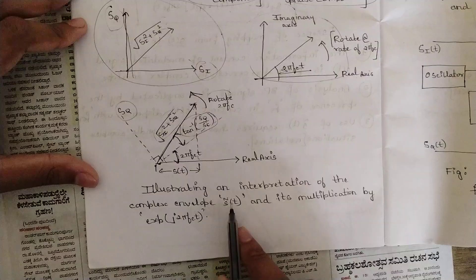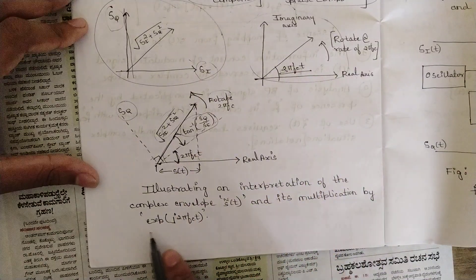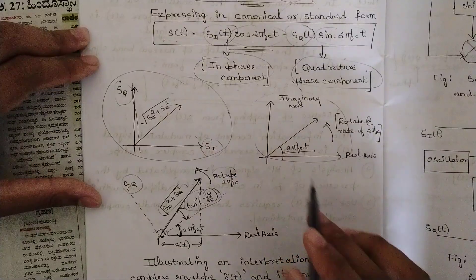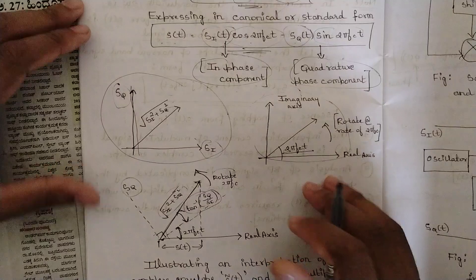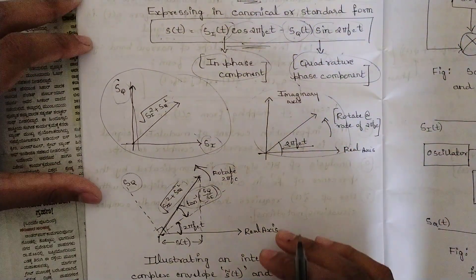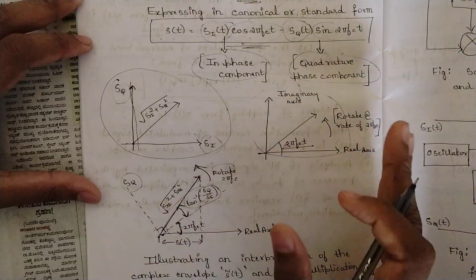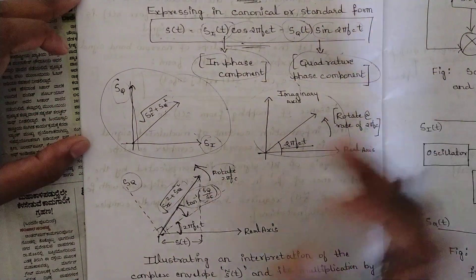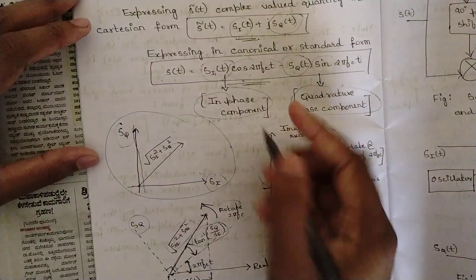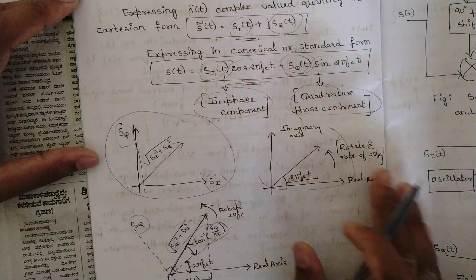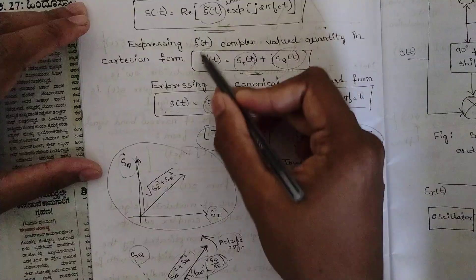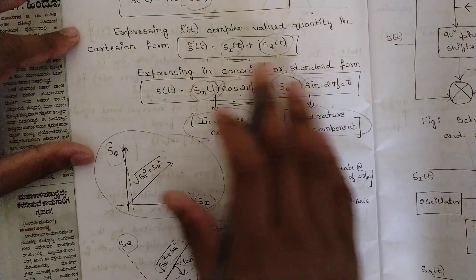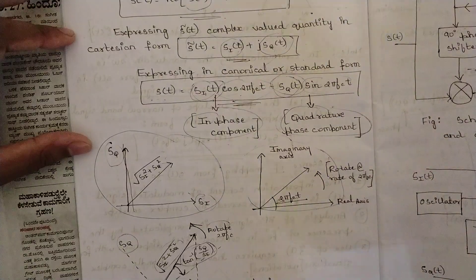This illustrates the interpretation of the complex envelope s-cap(t) and its multiplication by e to the power j2π f_c t. The phase reversal plays an important role here — the phase difference of 2π f_c t is significant because whenever the phase changes, the signal applied to the transmitter side has a difference when it reaches the receiver side. To balance the transmitter-receiver relationship, we check the in-phase component s_i(t) and quadrature phase component s_q(t), and how they interrelate with the pre-envelope using the complex envelope. This is the canonical representation of band pass signals.